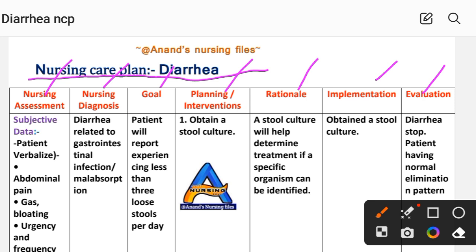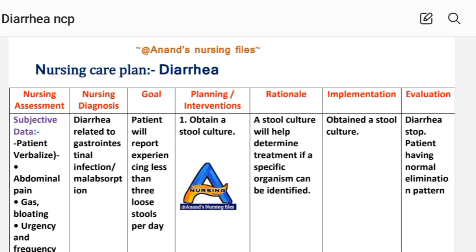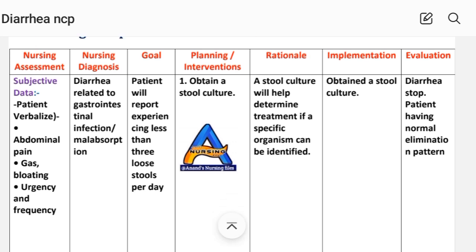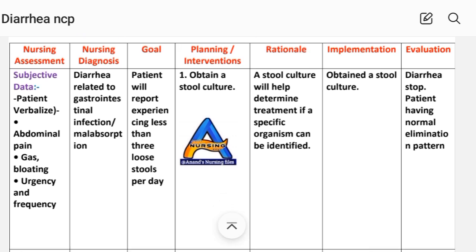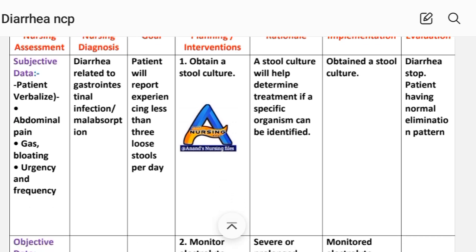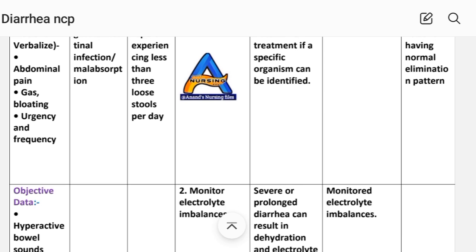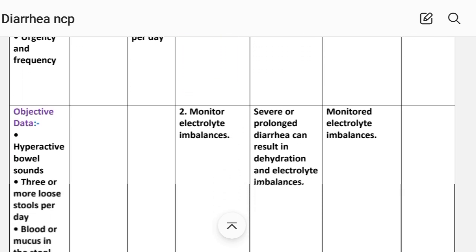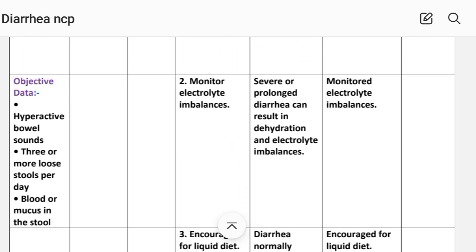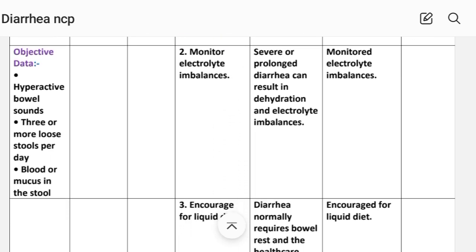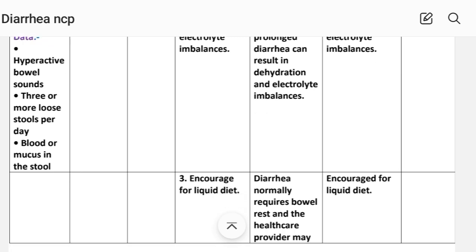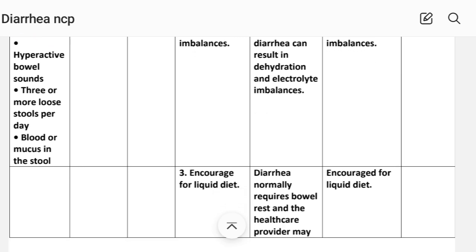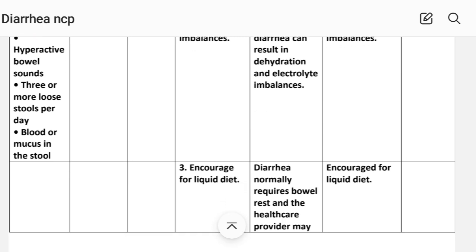First, let's look at the nursing assessment. Subjective data: the patient verbalizes about abdominal pain, gas bloating, urgency and frequency. Objective data: hyperactive bowel sounds, three or more loose stools per day, and blood or mucus in the stool.